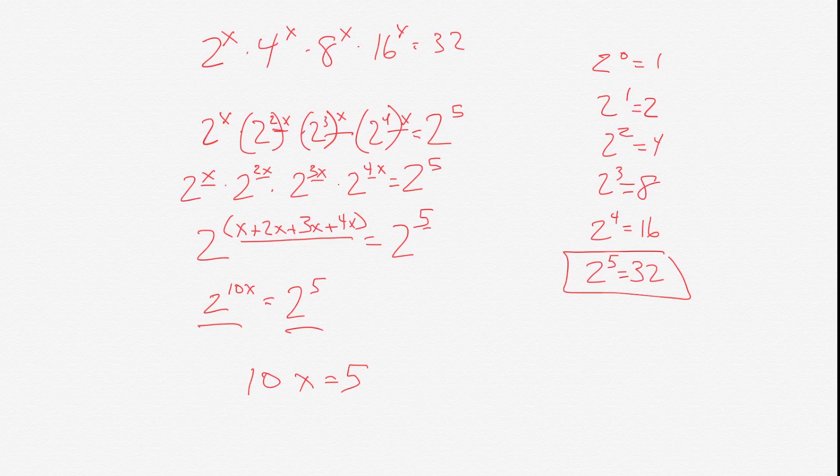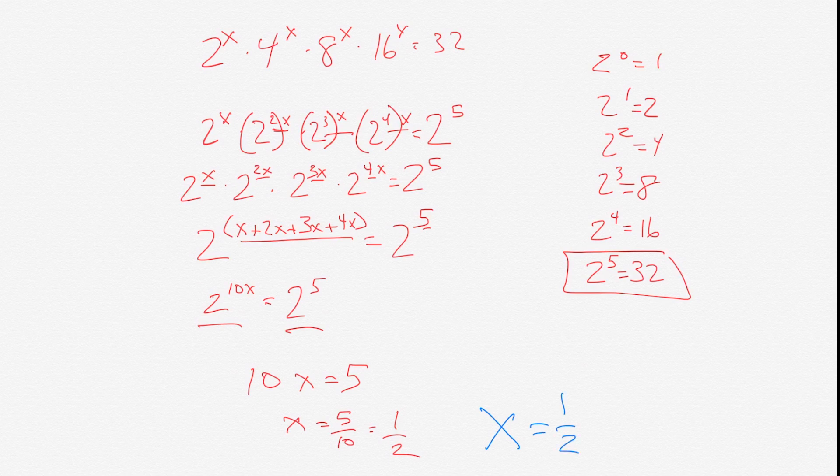So now we have 10x equals 5. We divide 10 to each side, we get x equals 5 tenths. Or to simplify that, it's 1 half. And that is our answer. x equals 1 half.